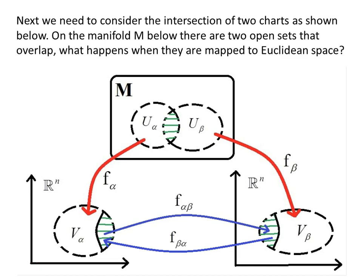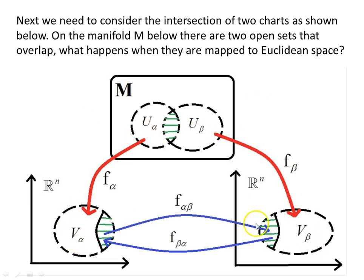Next we consider the intersection of two charts. Here is our manifold with two charts, U_alpha and U_beta. On the manifold M there are two open sets that overlap — so what happens when they are mapped to Euclidean space? Here is the chart U_alpha and mapping F_alpha to Euclidean space, mapping all of U_alpha to V_alpha. And here is U_beta with mapping F_beta, also mapping to Euclidean space. Notice the green section — the intersection — what happens there.